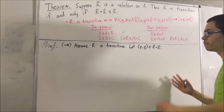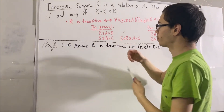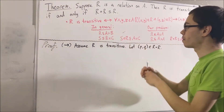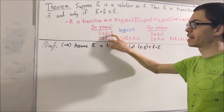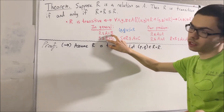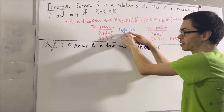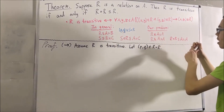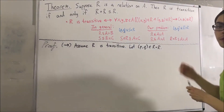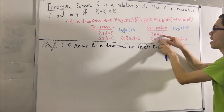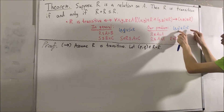So what does it mean for an ordered pair to be an element of our composition? Well, in general, when we have an ordered pair (P, Q) in S compose R, it means we can choose an element M in our intermediate set B such that (P, M) is an element of R and (M, Q) is an element of S. Putting that in the context of our problem, (P, Q) being an element of R compose R means we can choose an element M in A such that (P, M) is an element of R and (M, Q) is an element of R.